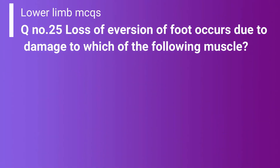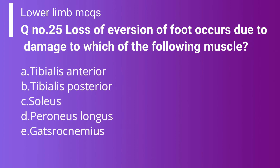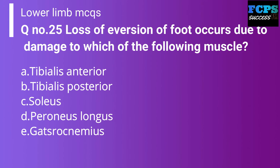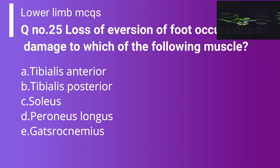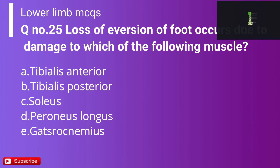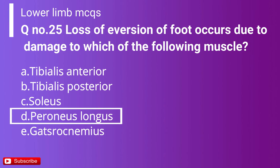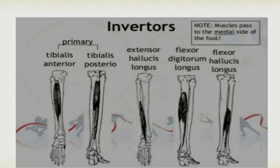Question 25: Loss of eversion of the foot occurs due to damage to which of the following muscles? Option A: Tibialis anterior. Option B: Tibialis posterior. Option C: Soleus. Option D: Peroneus longus. The correct answer is Option D — peroneus longus — because it is the everter of the foot. Options A and B are inverters, and Option C is a plantar flexor of the foot.